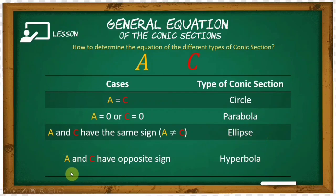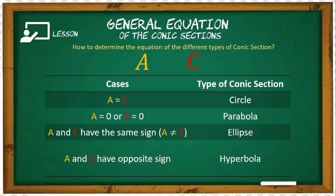For the last case: if a and c have opposite signs — for example, a is positive and c is negative, or vice versa — whenever the numerical coefficients of x² and y² have opposite signs, therefore the equation represents a hyperbola.